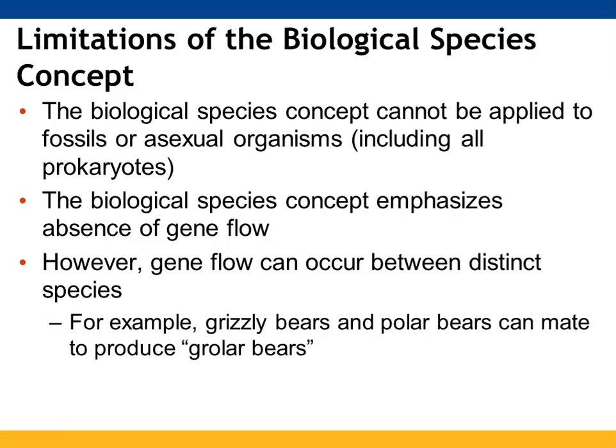One definition doesn't necessarily fit everything. With the biological species concept, we cannot apply it to fossils or to organisms that reproduce asexually. It also focuses on gene flow, but gene flow can occur between species that are similar — such as grizzly bears and polar bears, which are able to mate and produce growler bears.